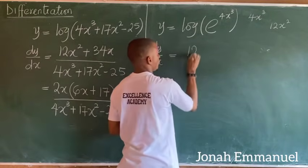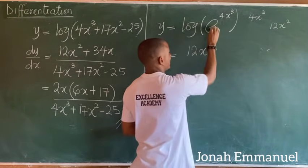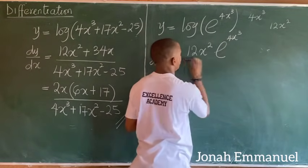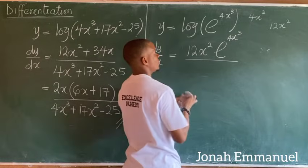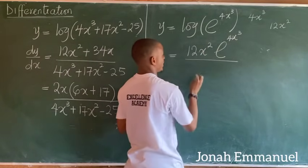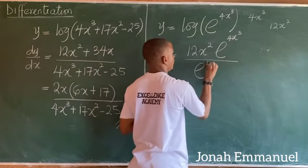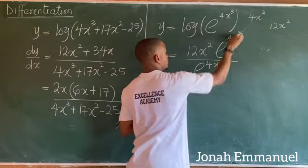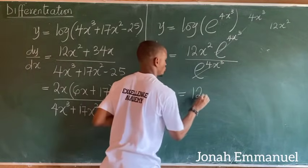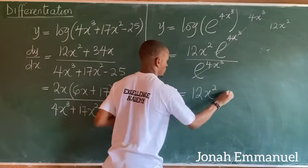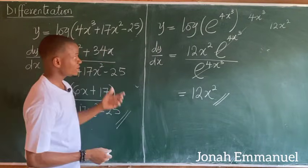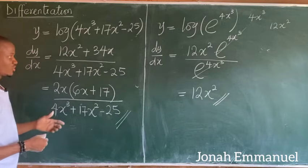So the numerator becomes 12x² times e^(4x³), all over e^(4x³) for the logarithmic part. The e^(4x³) terms cancel out, leaving the answer as 12x². This is how you differentiate logarithmic functions using the shortcut.